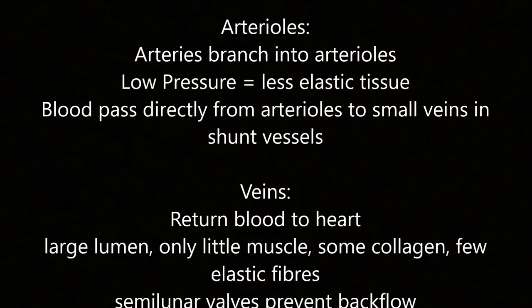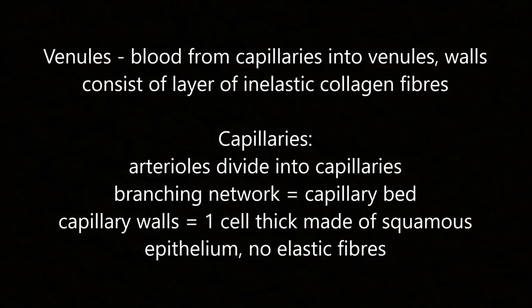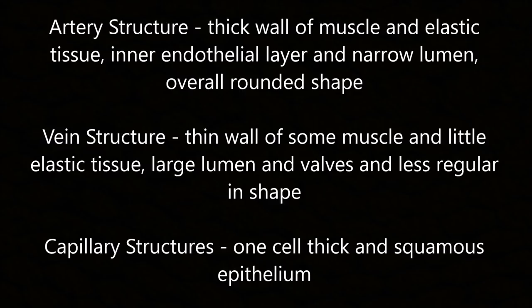Arterioles are branches of arteries at lower pressure, with less elastic tissue. Blood can pass from arterioles to small veins via shunt vessels. Veins return blood to the heart and have a large lumen with little muscle, some collagen, and few elastic fibres; they have valves to prevent backflow. Venules carry blood from capillaries and their walls consist of a layer of inelastic collagen fibres. Capillaries branch from arterioles into a capillary bed; capillary walls are one cell thick, made of squamous epithelium with no elastic fibres.